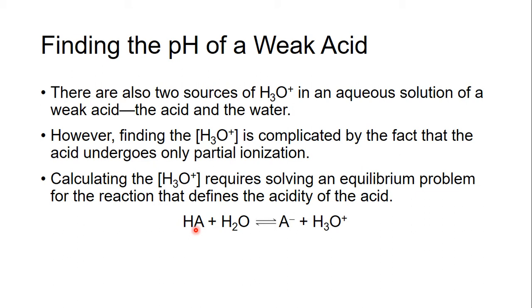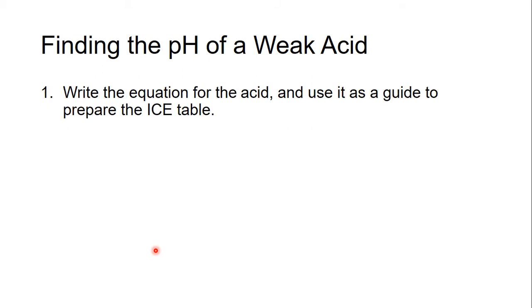We need to solve that our weak acid plus H2O goes to A minus plus H3O+, and this will have some kind of equilibrium constant, or Ka, with it. But we know how to solve these. We've done these problems before. It's an ICE table.